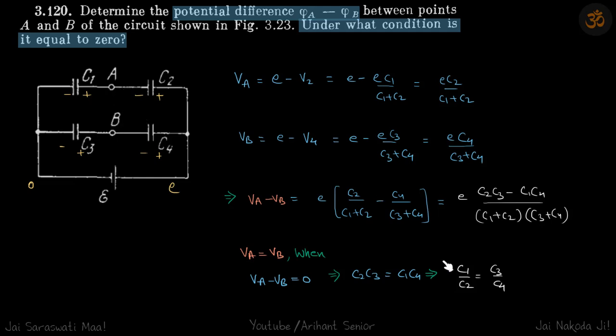This ratio you can write instead of thinking C1 by C2 equals C3 by C4, you can also think C1 by C3 equals C2 by C4. If you cross multiply these, you will get that. If you take C3 here and C2 there, then C1 by C3 equals C2 by C4. Either way you take the ratio, if the ratio is the same, then A and B are at the same potential.